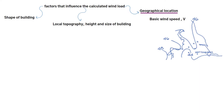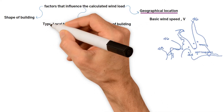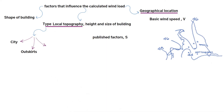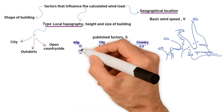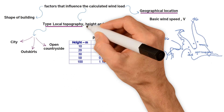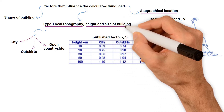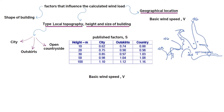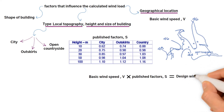This wind speed is then modified by published factors for the type of local topography — city, outskirts, or open countryside — as well as the height, since wind speed increases with height, and the overall size of the building. The basic wind speed is multiplied by the factor to give the design wind speed.